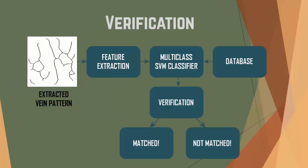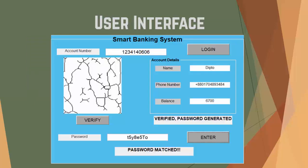This is the block diagram for verification. The classifier generates a label for the input image, and this label is matched with the account number for verification. The decision is taken based on this matching of labels. We have developed a graphical user interface using MATLAB GUIDE, which is demonstrated in the later portion of this video in detail.